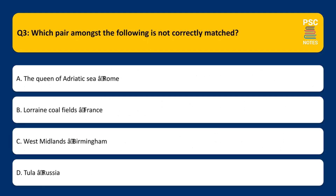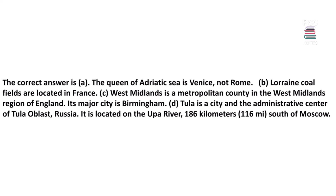Which pair amongst the following is not correctly matched? a. The Queen of Adriatic Sea — Rome. b. Lorraine Coalfields — France. c. West Midlands — Birmingham. d. Tula — Russia. The correct answer is a.